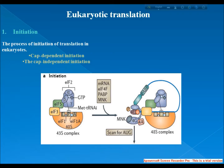Initiation of translation usually involves the interaction of certain key proteins with a special tag bound to the 5' end of an mRNA molecule — the 5' cap — as well as with the 5' UTR. The protein factors bind the small ribosomal subunit, also referred to as the 40S subunit, and three initiation factors hold the mRNA in place.